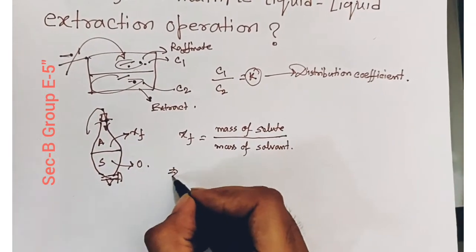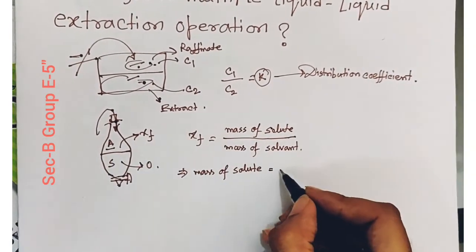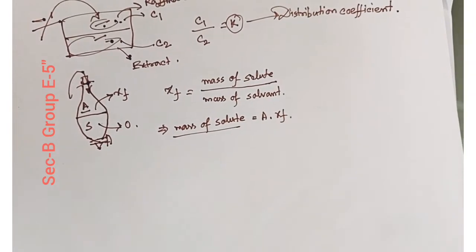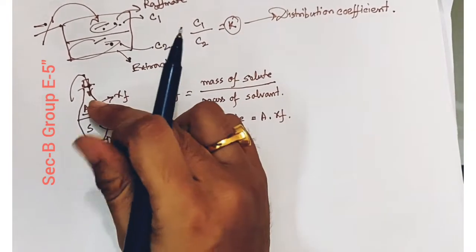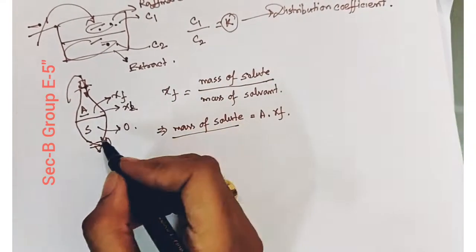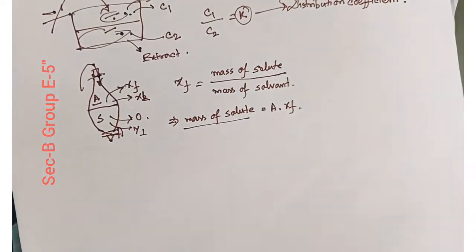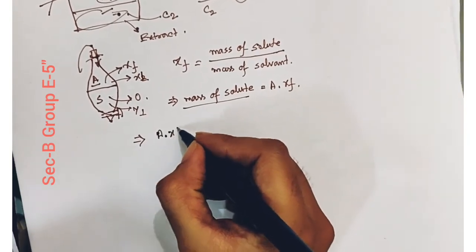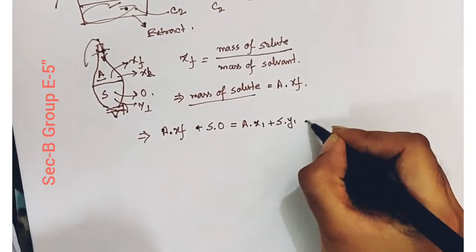XF equals the mass of solute divided by the mass of solvent. So the mass of solute equals the mass of solvent F multiplied by XF. After a certain period of time, due to the extraction operation, the concentration of the feed in the raffinate portion becomes X1, and in the extract portion it becomes Y1. From the mass balance equation: A·XF + S·0 = A·X1 + S·Y1. This is equation number 1.